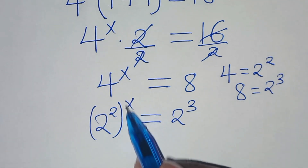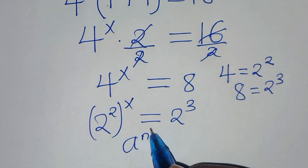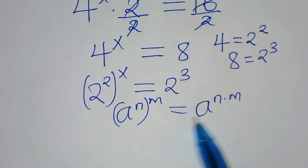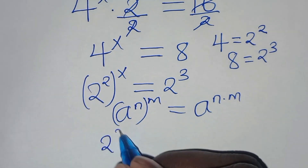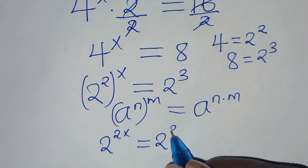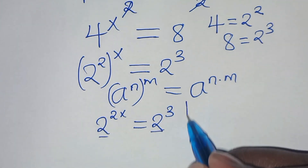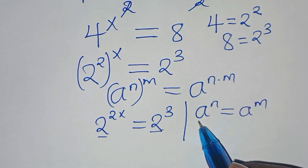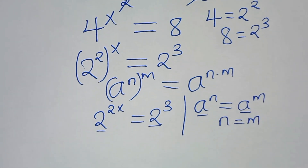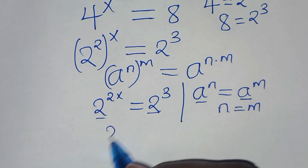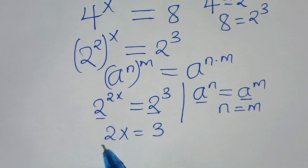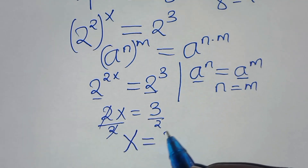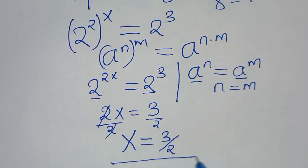Since 2 to the power of 2 raised to power x is in the form of a to the power of n raised to power m, we can express it as a to the power of n times m. Applying this exponent property, we get 2 to the power of 2x equals 2 to the power of 3. Since the bases are common, if a to the power of n equals a to the power of m, then n equals m. This implies 2x equals 3, so dividing both sides by 2 gives x equals 3 over 2, by applying method 1.